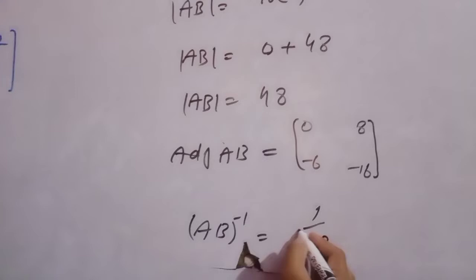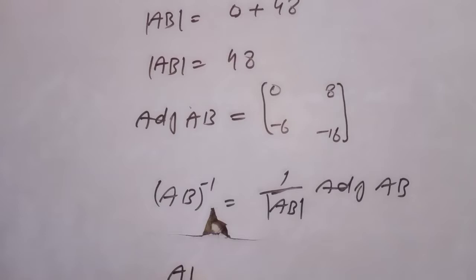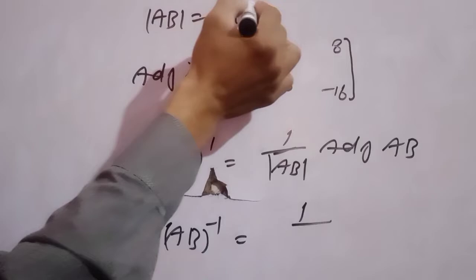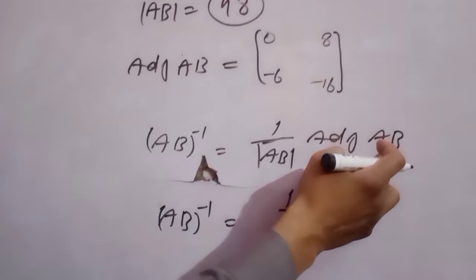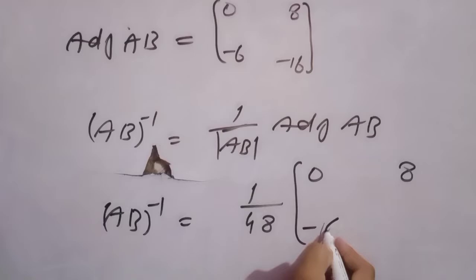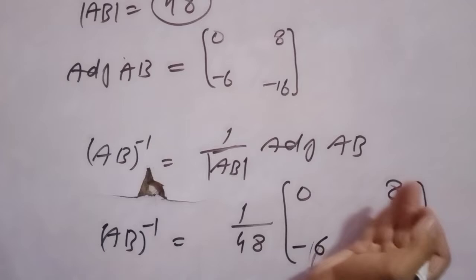तो AB whole inverse equal to 1 over det(AB) × adjoint(AB). AB का whole inverse equal to 1 over 48 × adjoint AB. Adjoint AB: 0, 8, minus 6, and minus 16.